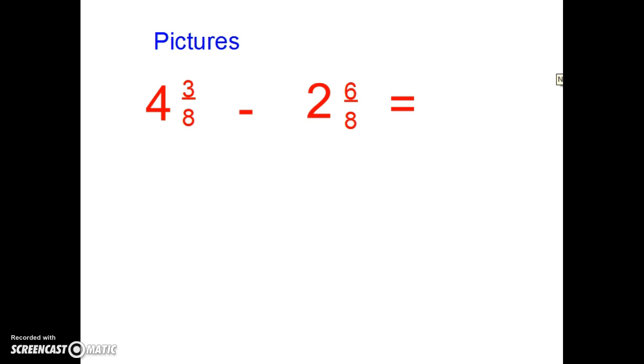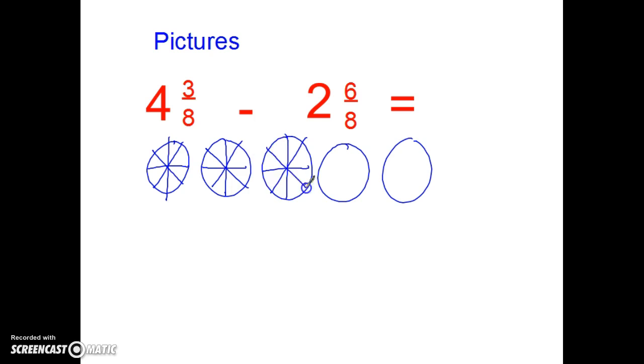Let's try the picture method out. So I need 4 and 3 eighths to start with. 3, 4. That's going to be my part of one. I'm cutting them in 2 eighths. Trying to make my pieces as much as I can. Now I need to put something in there so I know these are whole ones. There's one whole one. 2 whole ones. 3 whole ones. 4 whole ones. And then 3 eighths.